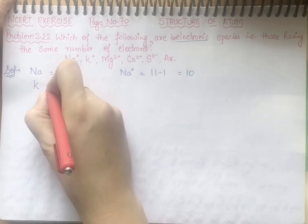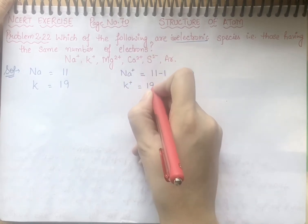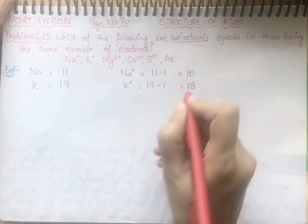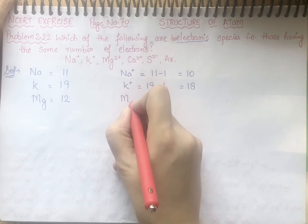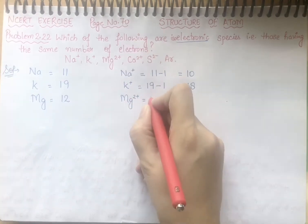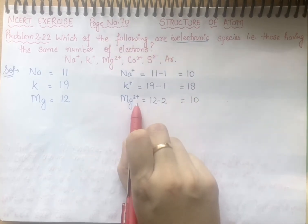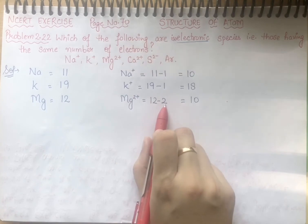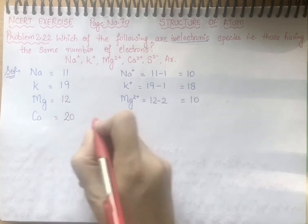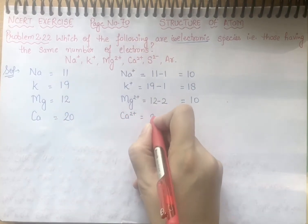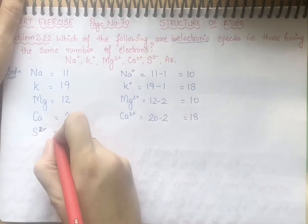Potassium has atomic number 19, so K⁺ means 19 minus 1, that means 18. Mg has atomic number 12. Positive ions का मतलब है कि इसमें से electrons minus हो रहे हैं, ये किसी को अपने electrons donate कर रहे हैं। Ca का atomic number 20 है, Ca²⁺ क्या होगा: 20 minus 2 equal to 18.